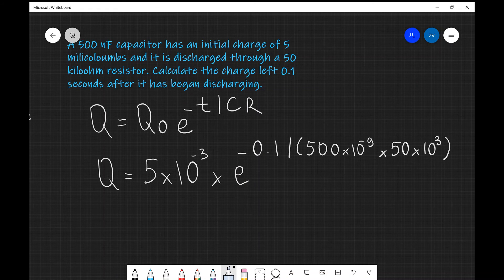Notice that there is quite a lot of scope for error here, so we need to be really careful when we're including all of the prefixes. For example, almost everything that we've written down has a prefix for it. We have 5 millicoulombs which is 5 × 10^(-3), 500 nanofarads 10^(-9), and we have an additional factor of 50 kilohms which is 50 × 10^3.